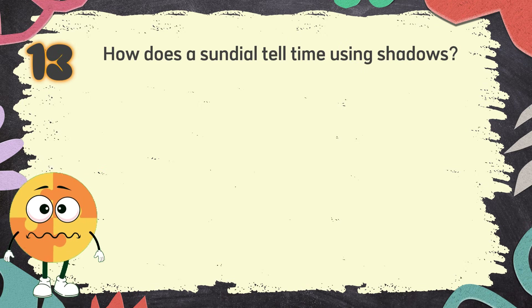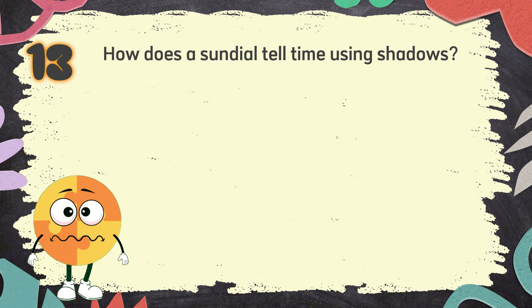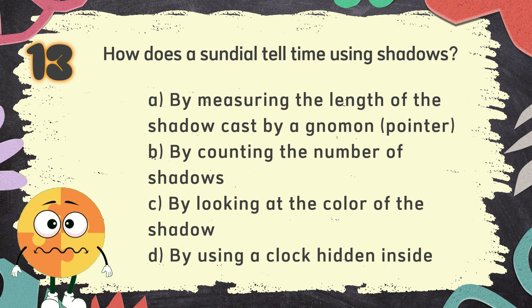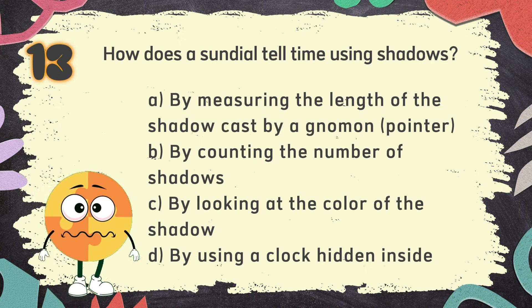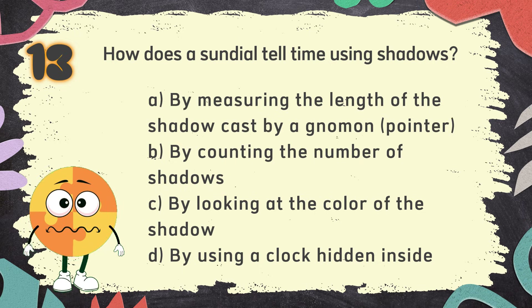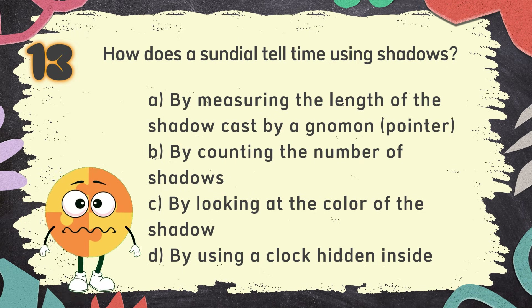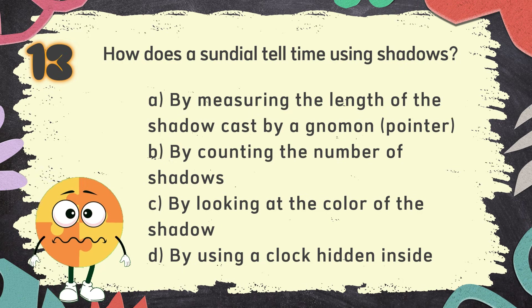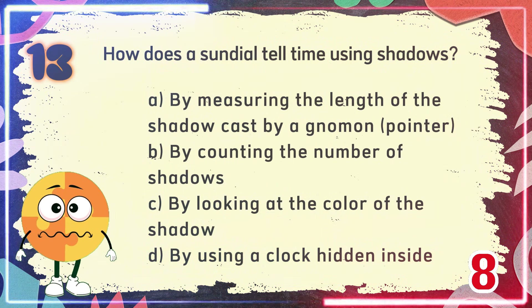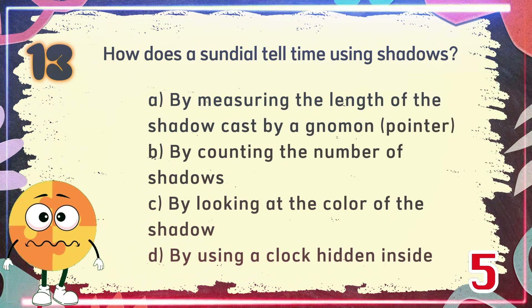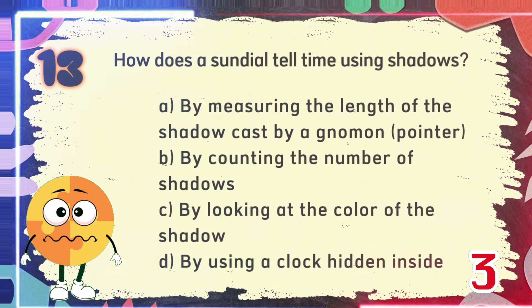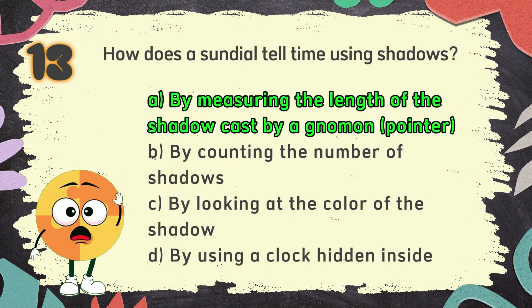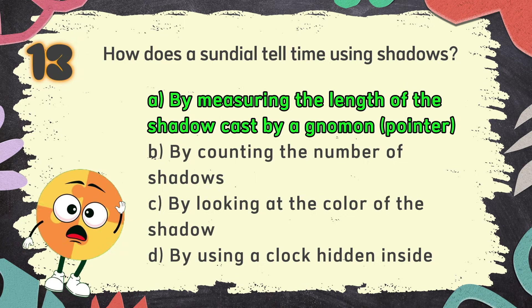Number 13. How does a sundial tell time using shadows? The choices are: A. By measuring the length of the shadow cast by a gnomon or pointer, B. By counting the number of shadows, C. By looking at the color of the shadow, D. By using a clock hidden inside. The correct answer is A: By measuring the length of the shadow cast by a gnomon or pointer.